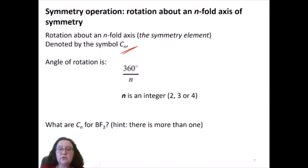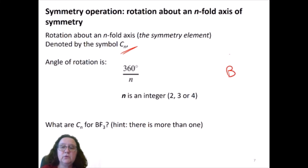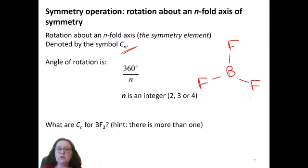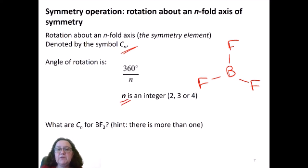If you go back and look at your molecule of boron trifluoride, I'll ask you to stop the video now and work out how many axes we have in the molecule of boron trifluoride, what the n would be, and how many rotations we can get out of those axes. As a hint, there is more than one Cn axis, so please stop the video now.